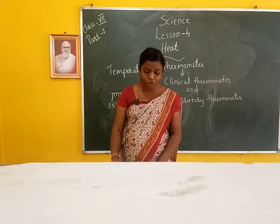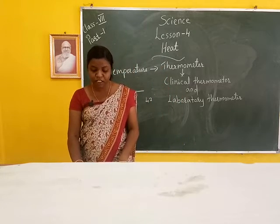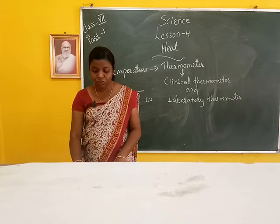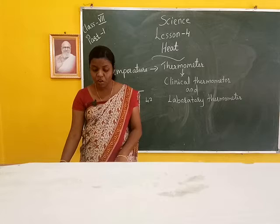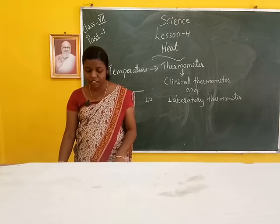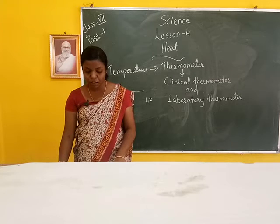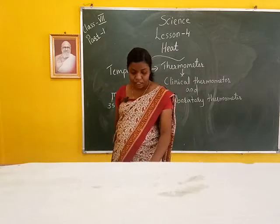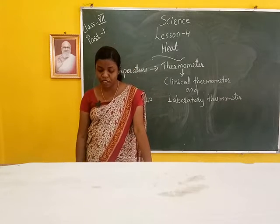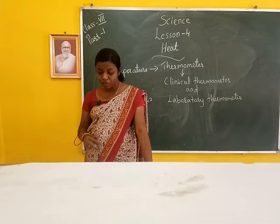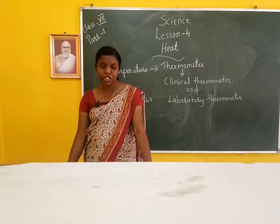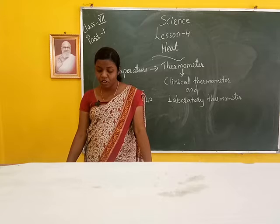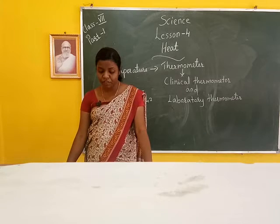How to read a clinical thermometer: First, wash the thermometer with an antiseptic solution, or with clean water if antiseptic is not available. Hold the thermometer and give it a jerk so that the mercury thread falls below 35 degrees Celsius. Then place the bulb end of the thermometer under the tongue of the patient for about one minute. Take out the thermometer and hold it at the upper portion only, rotating it slowly.